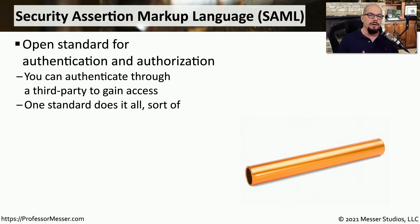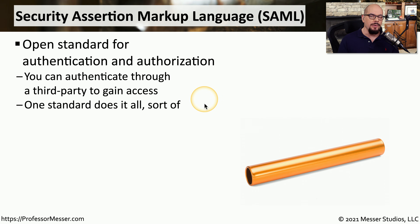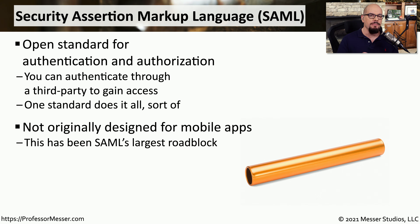There have been a number of different standards used through the years to allow someone to authenticate and authorize someone to access a third party set of resources. One of these standards is SAML — the Security Assertion Markup Language — and it was designed to provide both authentication and authorization for users to access third party resources. This one standard provides a great deal of functionality, unless of course you're a mobile app.